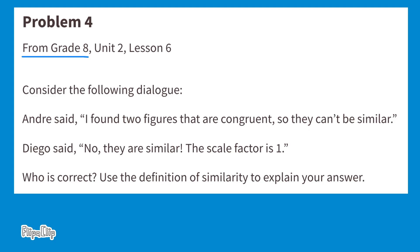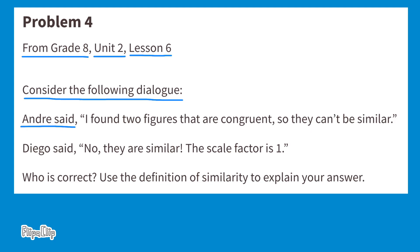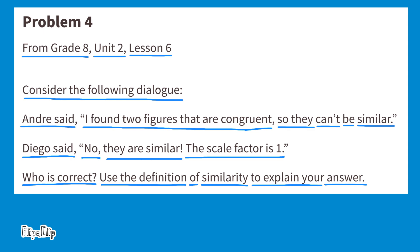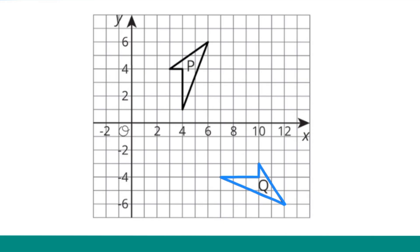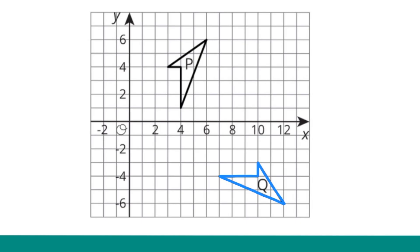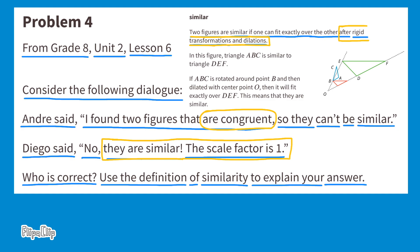Problem number four, from eighth grade unit two, lesson six: consider the following dialogue. Andre said, 'I found two figures that are congruent, so they can't be similar.' Diego said, 'No, they are similar — the scale factor is one.' Who is correct? Two figures are similar if one can fit exactly over the other after rigid transformations and dilations. The two figures are congruent — same size and shape — and after a dilation with scale factor one, they would be similar. So I agree with Diego.